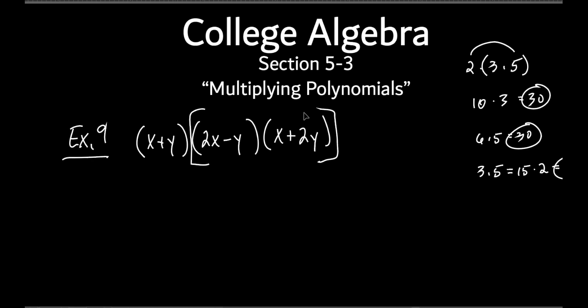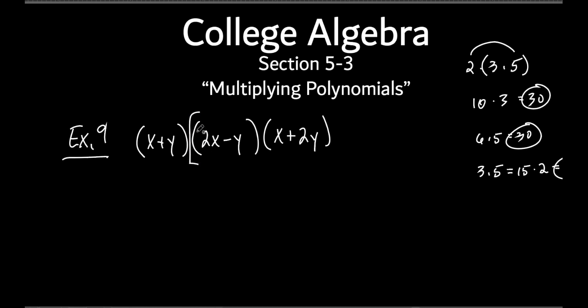I'm just going to keep this x plus y out here so I don't forget about it, and now I want to multiply these two together. How do you multiply two binomials? Use the FOIL method — which is the distributive property. Yesterday we talked about FOIL. So we're going to take the first: I'm going to put a parenthesis here, figure out what all this is, and stick it in that parenthesis. 2x times x — what's that? 2x squared, because x times x is x squared. That's the first.